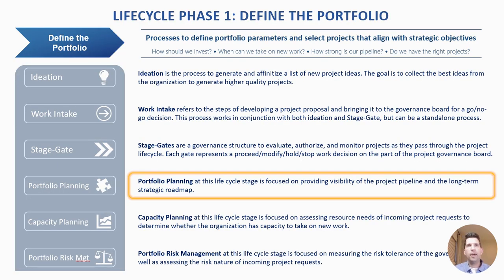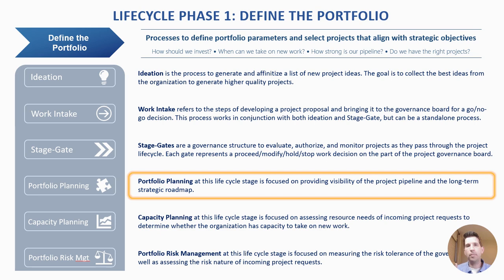This slide highlights where roadmaps come in as it relates to portfolio planning. This is a summary of the first lifecycle phase in portfolio management — defining the portfolio. Portfolio planning at this stage is really focused on getting visibility of the project pipeline: everything we're doing, as well as the long-term strategic roadmap. We can get visibility of what's in the current pipeline, and that'll help us identify if we need to add additional projects, or even when we should add them.